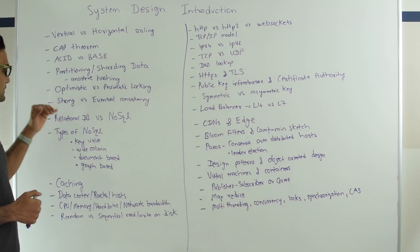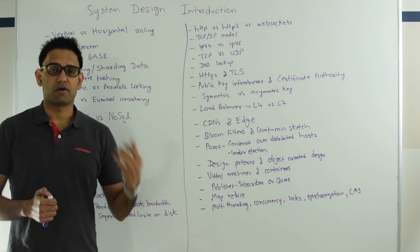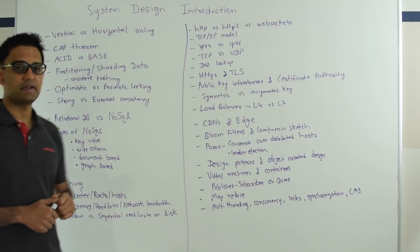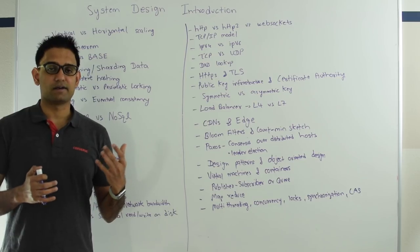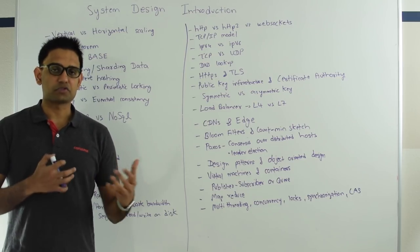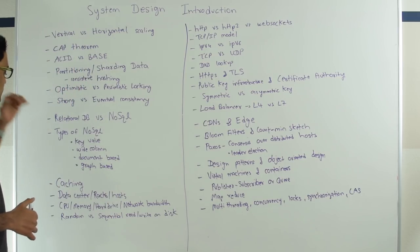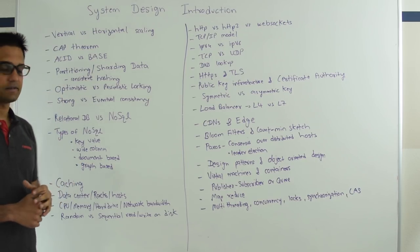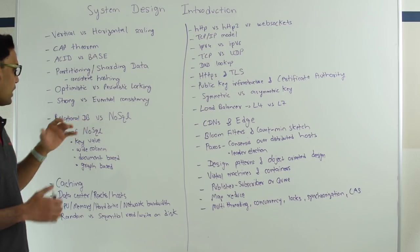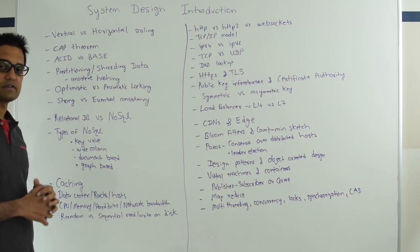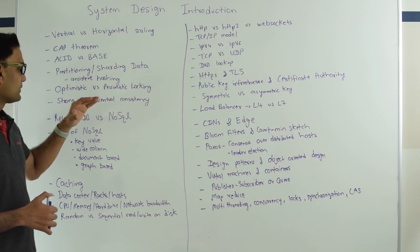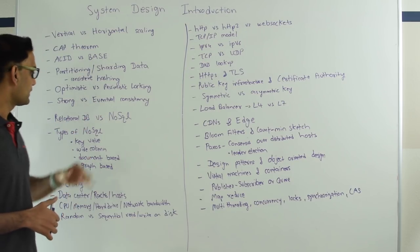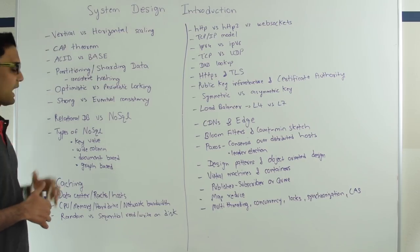Strong versus eventual consistency. So here strong consistency means that your reads will always see the latest write while eventual consistency means that your reads will see some write and eventually it will see the latest write. So strong consistency is obviously used in relational databases. In NoSQL database you have to decide if you want strong versus eventual consistency and the benefit of the eventual consistency is that it provides higher availability and this all goes back to the CAP theorem.